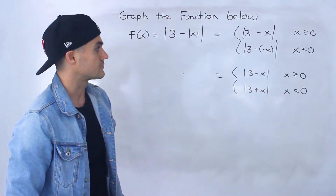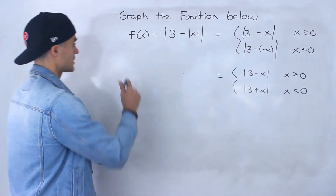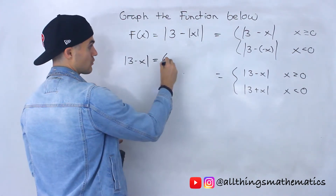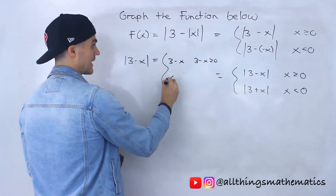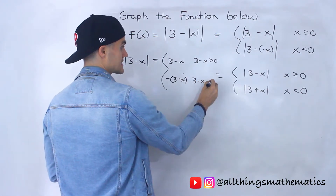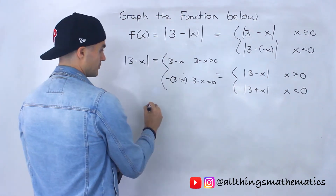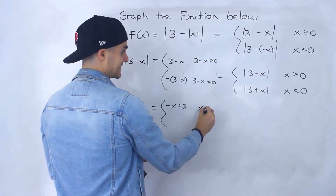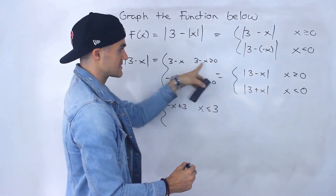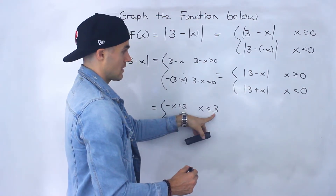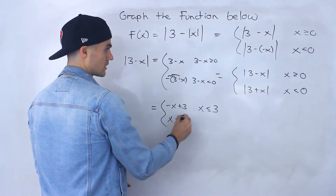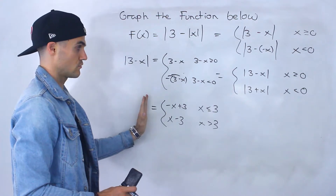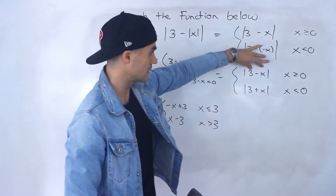Now we work with these two absolute values separately. For the absolute value of 3 minus x: it equals 3 minus x when 3 minus x is greater than or equal to 0, and negative(3 minus x) when 3 minus x is less than 0. Simplifying, that gives us negative x plus 3 when x is less than or equal to 3, and x minus 3 when x is greater than 3.